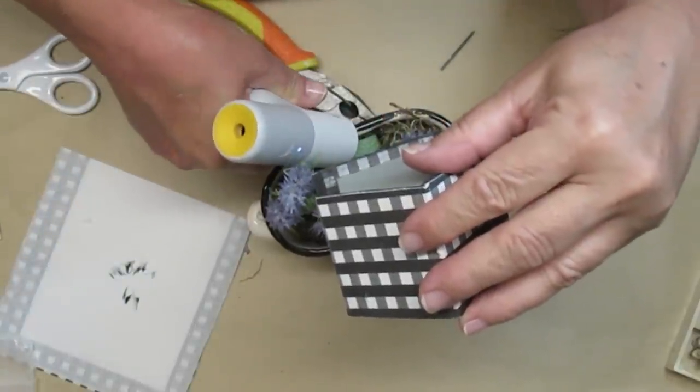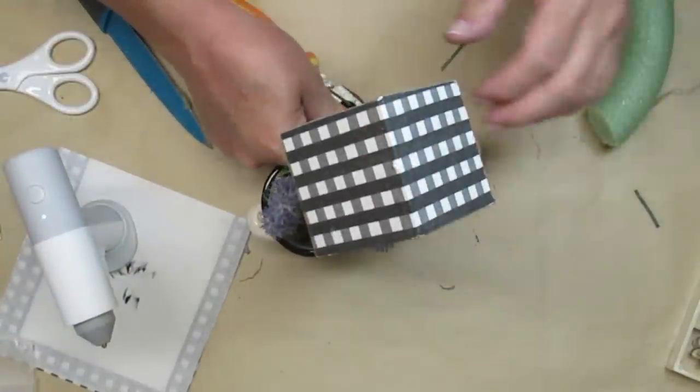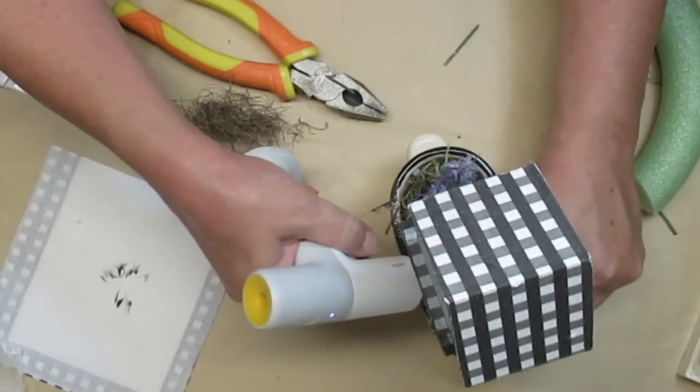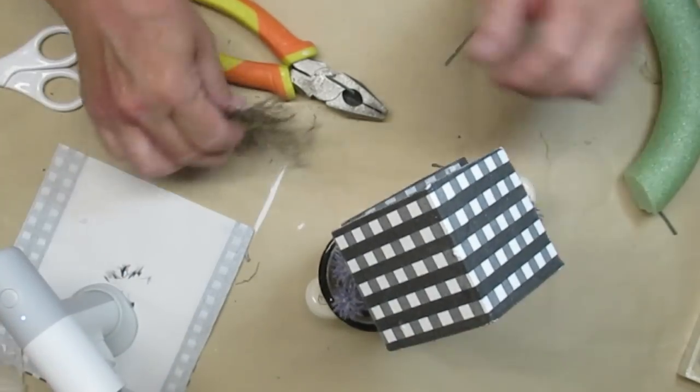I covered the green styrofoam with a little more Spanish moss and then added a sweet little buffalo check or gingham bow to the side of the container and I think this turned out pretty sweet.